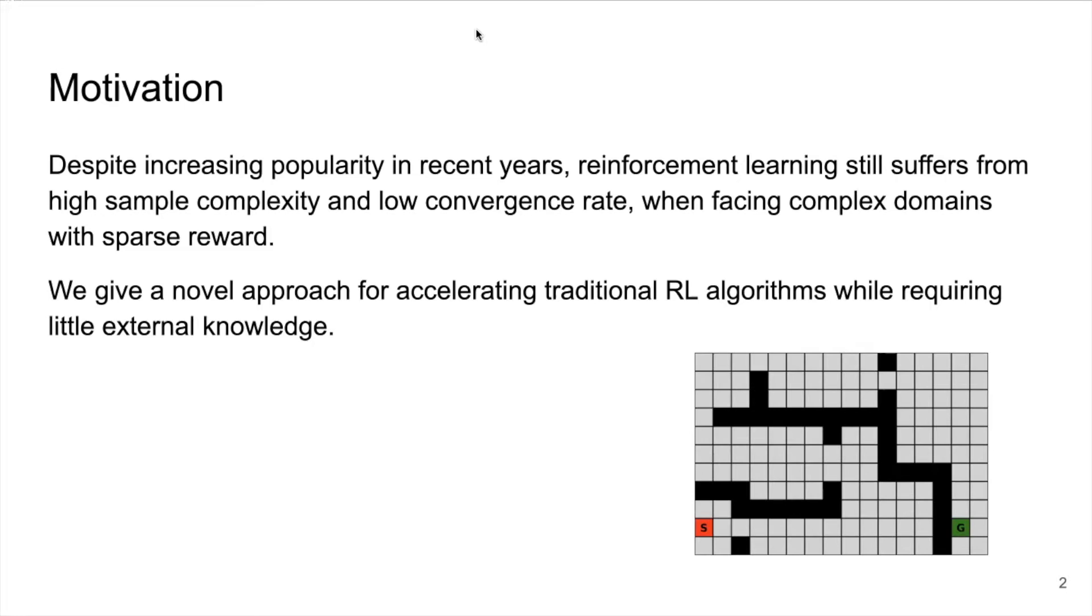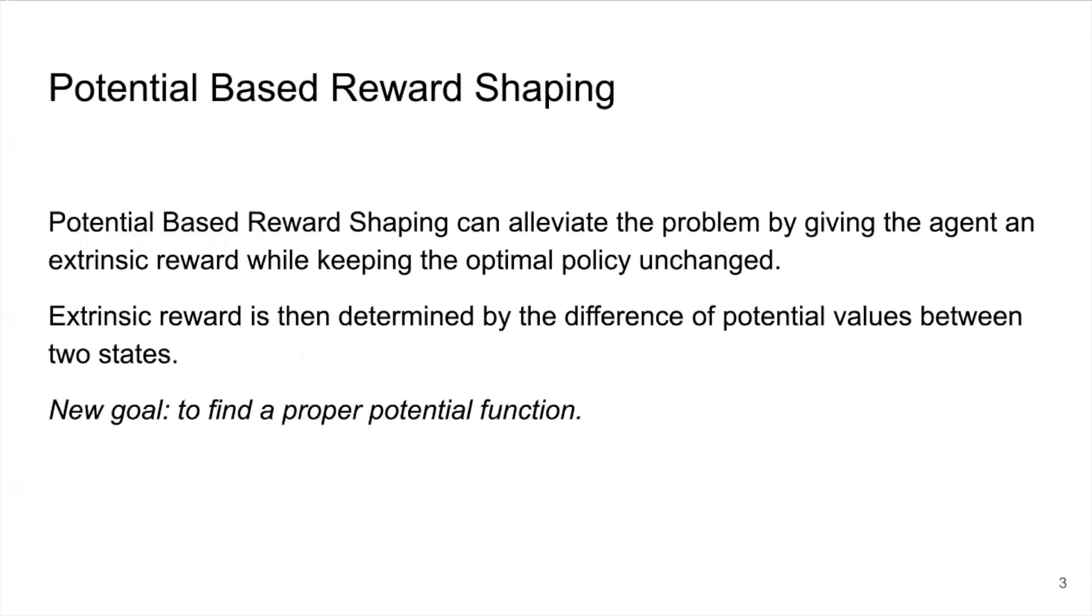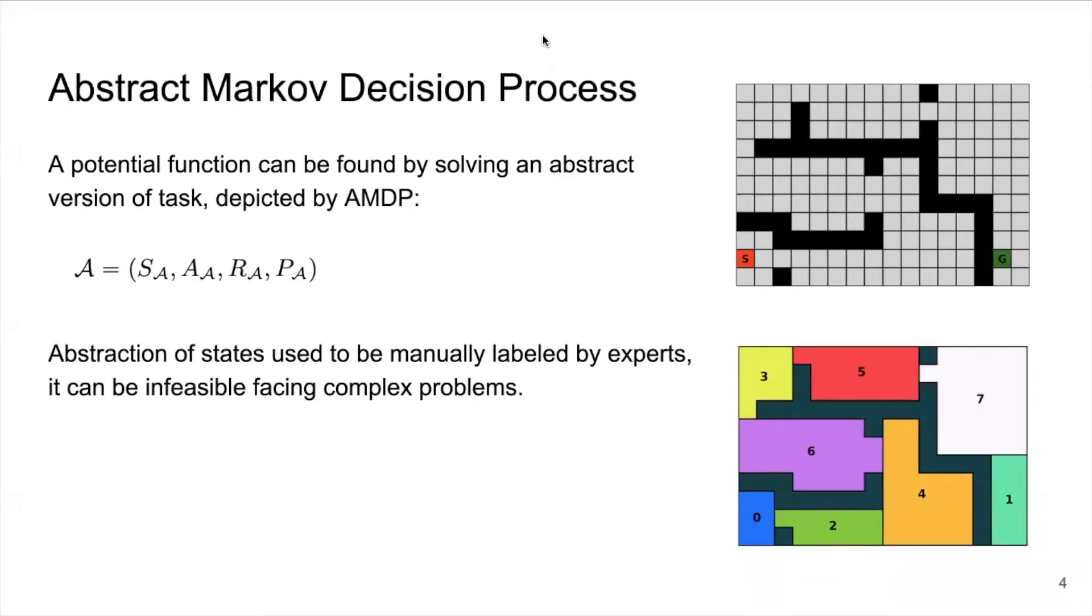I want to mention potential-based reward shaping, which is a well-known technique to speed up the learning process by giving the agent an extrinsic reward while keeping the optimal policy unchanged. The extrinsic reward is determined by the difference of potential values between two states. A potential function can be found by solving an abstract version of task, which can be depicted by an abstract Markov decision process, called AMDP.